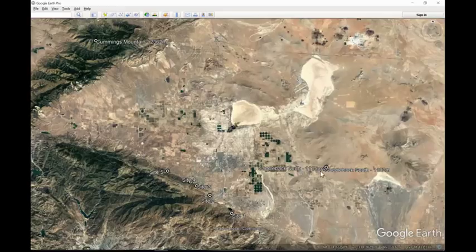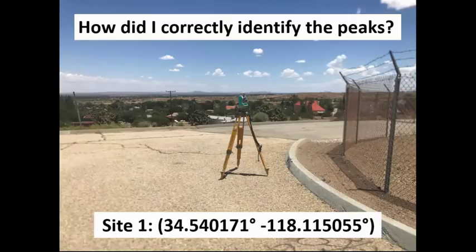So I chose a couple of different mountains. I chose Saddleback Butte off to the northeast. And obviously given the name, there are two peaks there, Saddleback North and Saddleback South. I also chose Cummings Mountain off to the northwest.